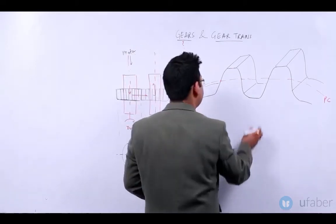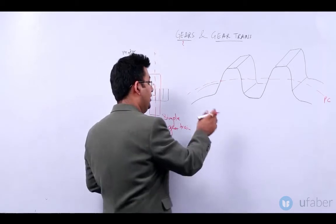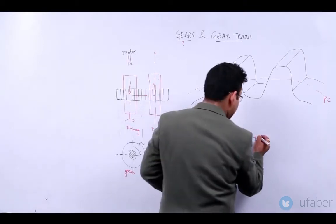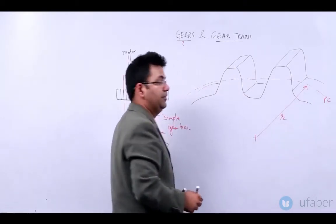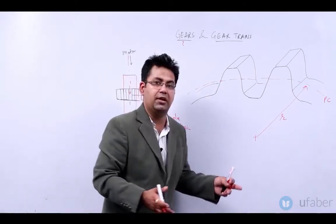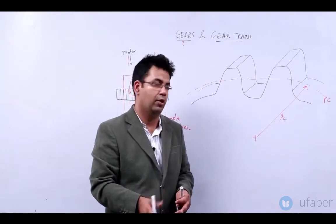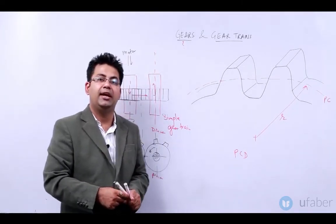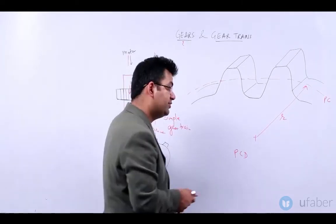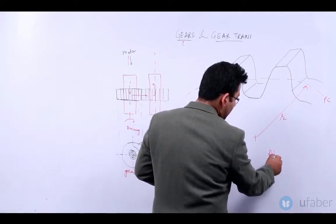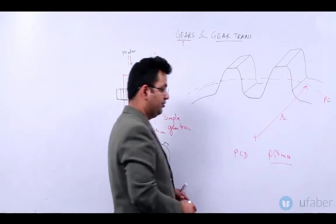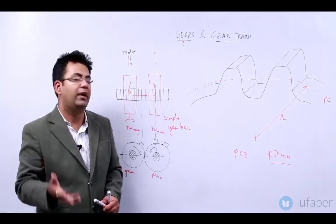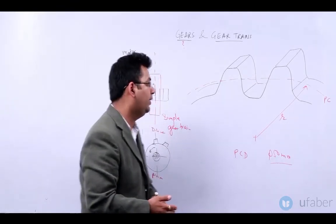The radius of this pitch circle is known as the pitch radius, and the diameter of this pitch circle is known as the pitch circle diameter, or PCD. Commercially, if you have to specify a gear size, it is specified in terms of its PCD. So if somebody says the gear size is 50 mm, that diameter refers to the PCD — the pitch circle diameter.